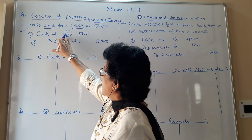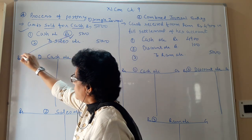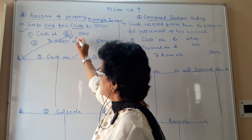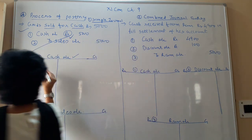So here the cash account debit. Debit means go to the debit side of the cash account. Is that clear? How much you have to put? You have to put 5,000 rupees.